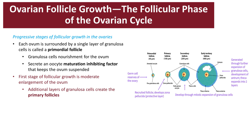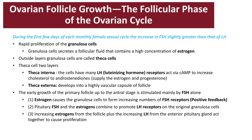When FSH and LH are released in significant quantities at puberty, the ovaries and follicles begin to grow. During the first few days of each cycle, FSH increases slightly more than LH, causing acceleration of growth of about 6 to 12 follicles every month. This leads to proliferation of the granulosa cell layer and gives rise to a second layer of cells called the theca, divided into the theca interna and the theca externa. The theca interna, composed of epithelioid tissue, has many LH receptors and uses the cAMP system to increase cholesterol conversion to androstenediones, supplying the creation of estrogen and progesterone. The theca interna then develops into the highly vascular capsule layer of the follicle, and the cells begin to secrete follicular fluid with a high amount of estrogen.